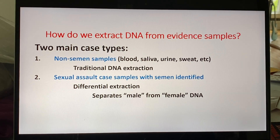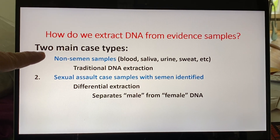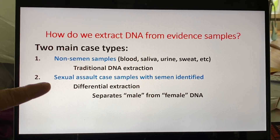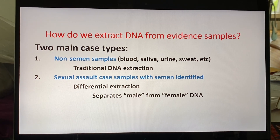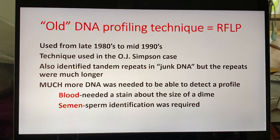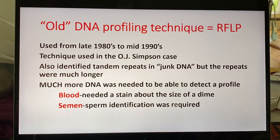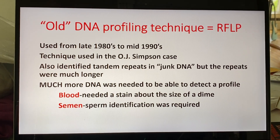There were two main types: traditional, which is basically everything except sperm cells, and then in sexual assault cases where sperm has been identified, you use a differential extraction. Let me run you through a little bit of history. When I started doing DNA and was trained in it, we were using this older technique. I'm not going to put out the big long name for it — you don't have to memorize that.